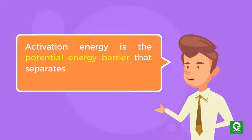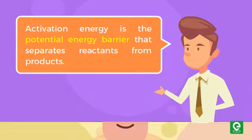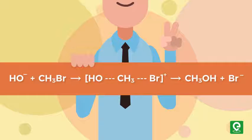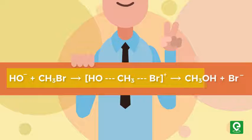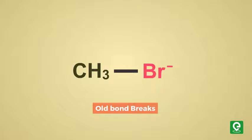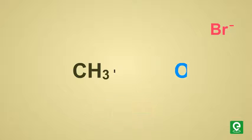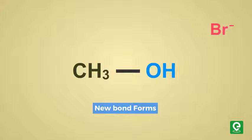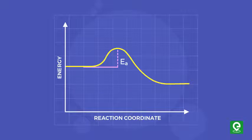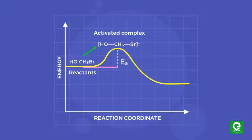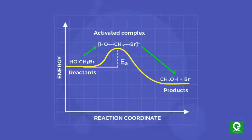For example, in this reaction when OH minus and CH₃Br react to form CH₃OH and Br minus, the old CH₃-Br bond must break and a new OH-CH₃ bond must form. The reaction coordinate diagram for this reaction shows that the reactant molecules OH minus and CH₃Br and the product molecules CH₃OH and Br minus are stable.